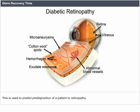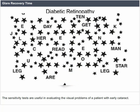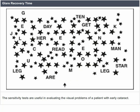To conclude, glare is an important factor in visual disability with anterior segment disease. The sensitivity tests are useful in evaluating the visual problems of a patient with early cataract. Glare recovery time is useful in predicting the possibility of development of retinopathy in diabetics.